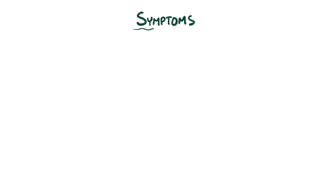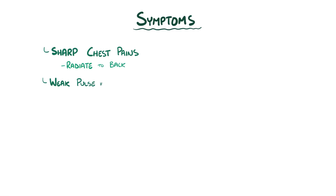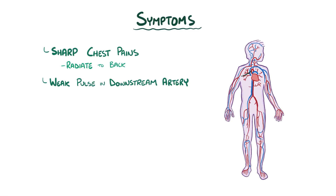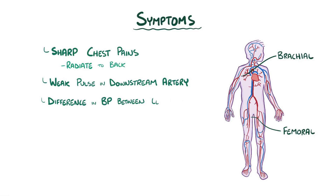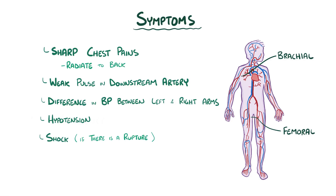The main symptoms of aortic dissection are sharp chest pains that often radiate to the back. A person might also develop weak pulses in downstream arteries like the brachial or femoral arteries, or sometimes differences in blood pressure between the left and right arm. Aortic dissection is an emergency because it can lead to hypotension and shock if there is rupture and significant blood loss.